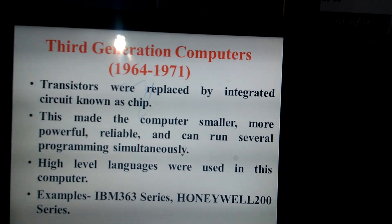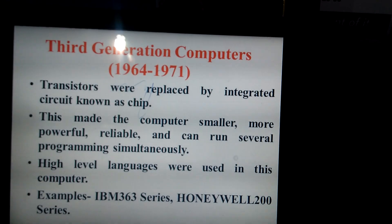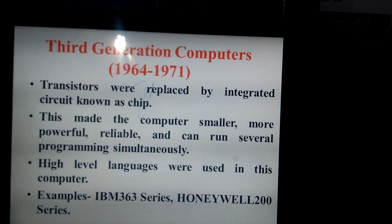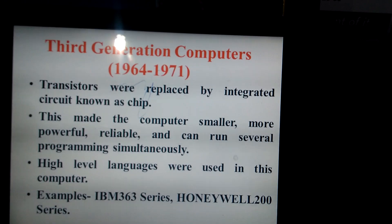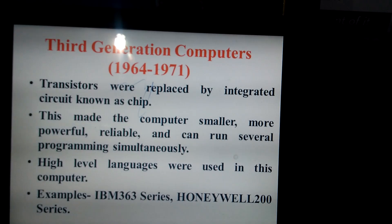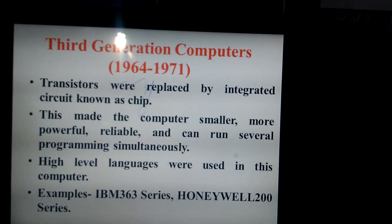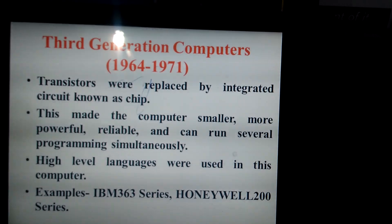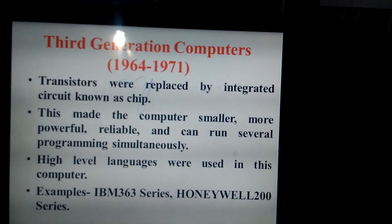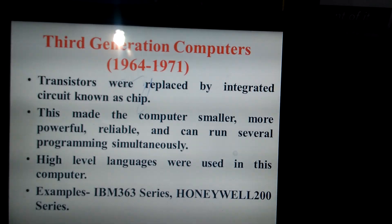Third generation computers had a time period of 1964 to 1971. Transistors were replaced by integrated circuits, known as chips. Instead of transistors used in the second generation, a smaller circuit called a chip was introduced, making computers smaller and more powerful.